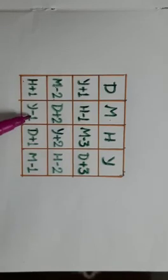If you follow this: m minus 2, d plus 2, y plus 2, h minus 2, h plus 1, y minus 1, d plus 1, m minus 1, you will be getting your own magic square.